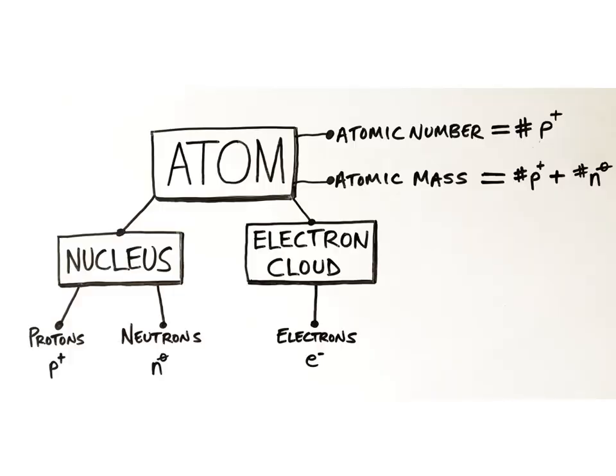The other important number describing atomic structure is the atomic mass, also called the mass number. The mass number of an atom is equal to the number of protons and neutrons in the nucleus of an atom. Even though the electrons have a mass, it is extremely small and negligible, so they contribute nearly nothing to the overall mass of an atom. This is why, for our purposes, we don't factor in the electrons when determining the mass number of an atom.